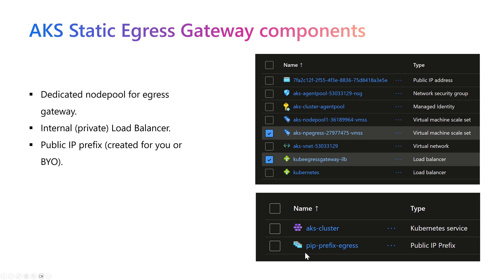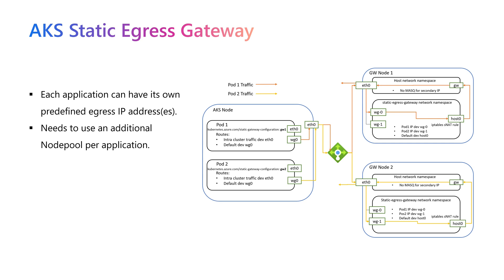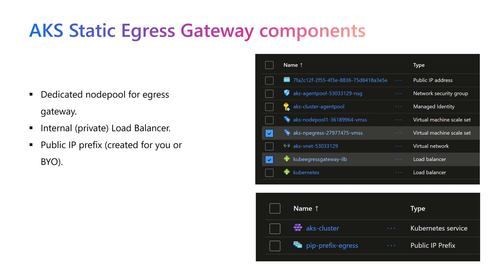For the public IP prefix, you can let the add-on create a prefix for you, or you can bring your own IP addresses or IP prefix. AKS Static Egress Gateway is managed as an open source project on GitHub within the Azure repository, where you'll find documentation and design details. In this demonstration, we'll learn how to use AKS Static Egress Gateway to give our application a specific dedicated public IP address for its egress traffic.